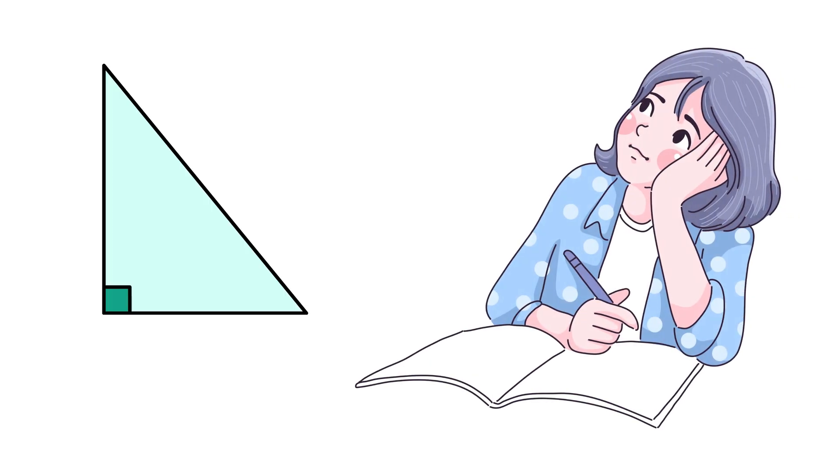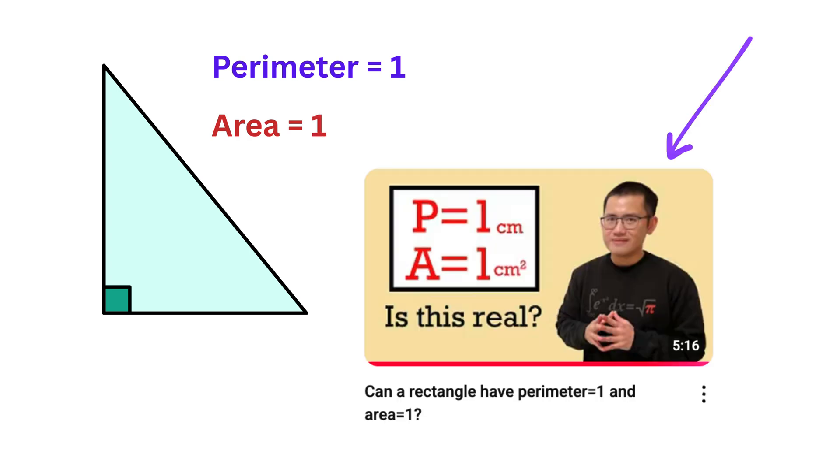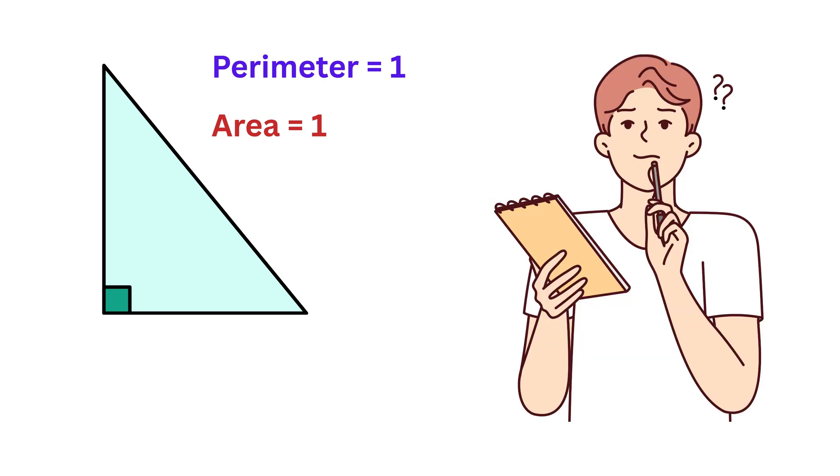Have you ever wondered whether there can be a right-angled triangle whose perimeter is one unit and area is also one unit square? This guy has solved a similar problem on a rectangle, so I thought, why not try it out on a right-angled triangle?